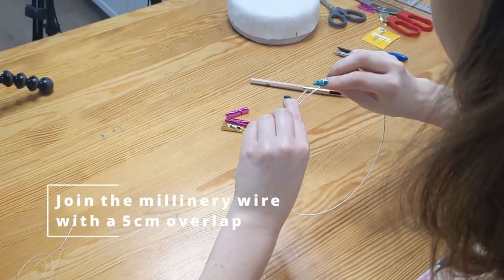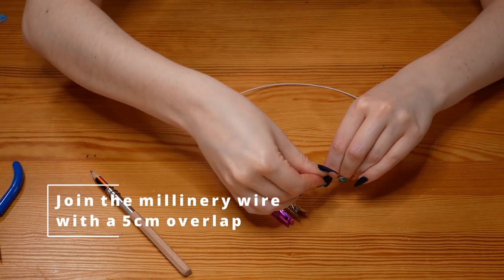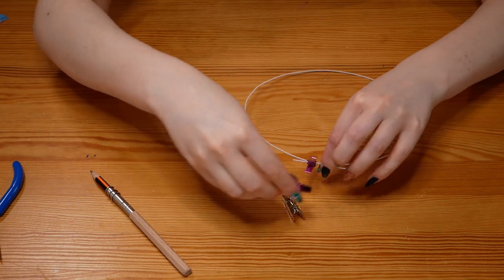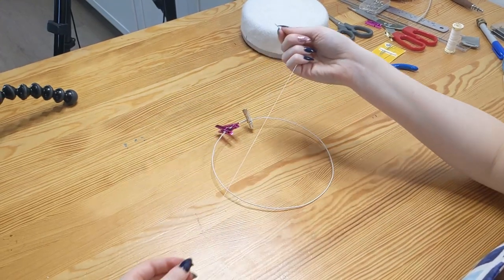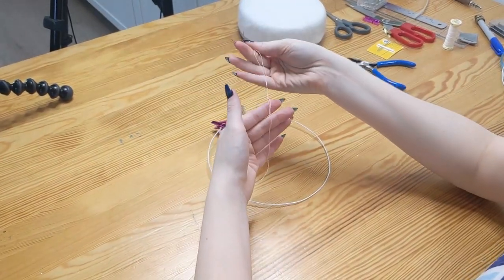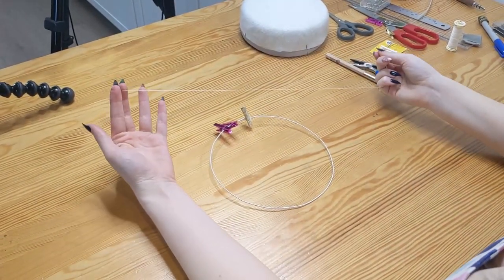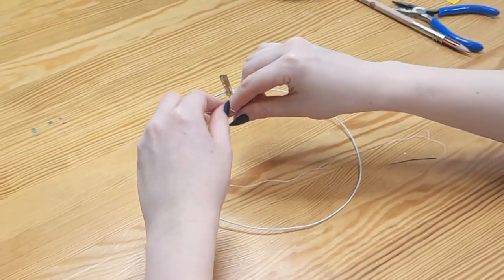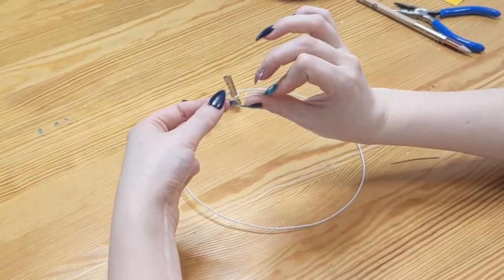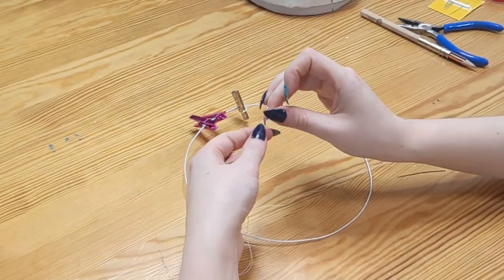Next, I'll join my wire with the 5cm overlap and hold it in place with some mini clothes pegs. I'm using a double threaded needle with a knot joining the ends of the thread. Here's how I do a super quick knot: wrap the thread around the index finger, clamp down and roll it between that finger and my thumb, hold it tight and pull it through.